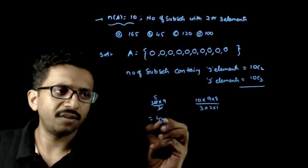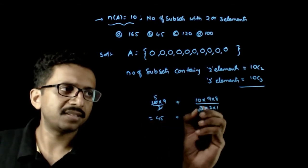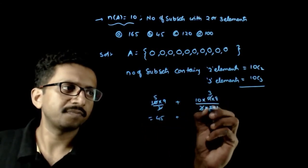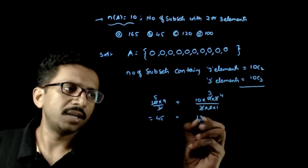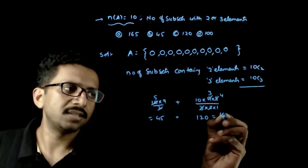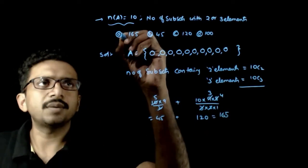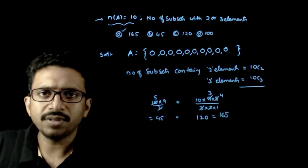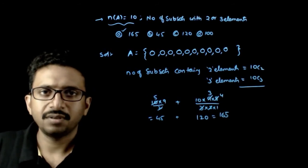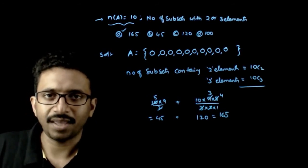45 plus 120 equals total 165. So, you have 165 subsets containing either 2 elements or 3 elements. Option A is the right answer. Thank you.